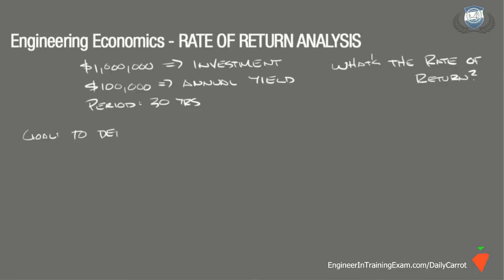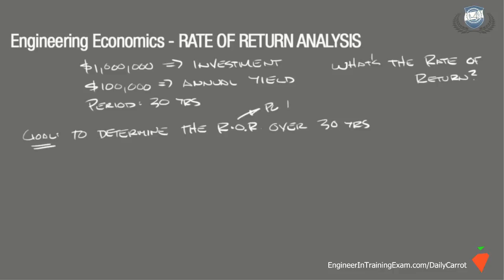The goal is to determine what the rate of return over the 30-year period will be for the firm. The rate of return can be determined by setting the equivalent uniform annual benefits against the equivalent uniform annual costs and solving for the interest rate that will make them equal. A short explanation of the rate of return can be referenced on page 115 of the NCEES Supplied Reference Handbook.